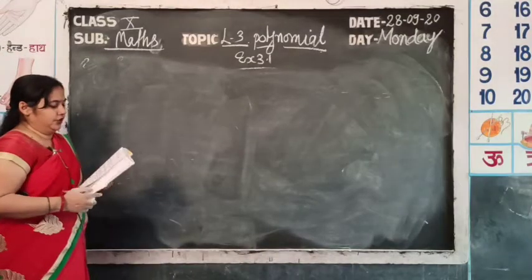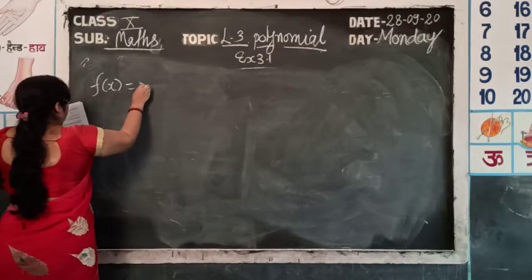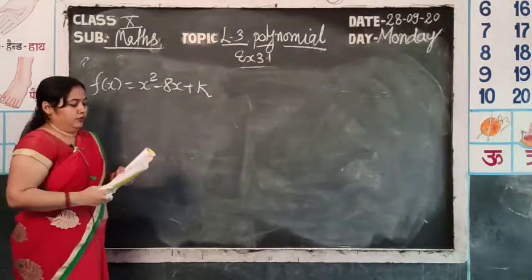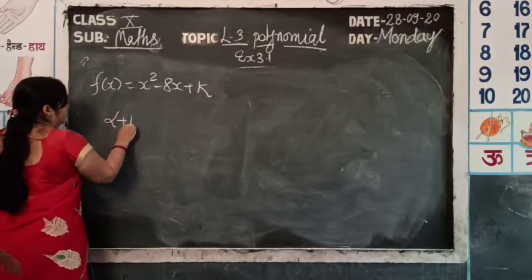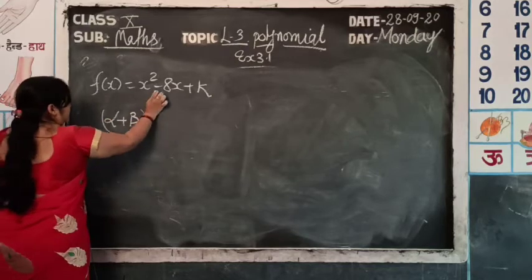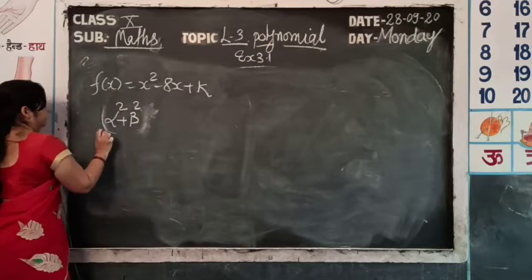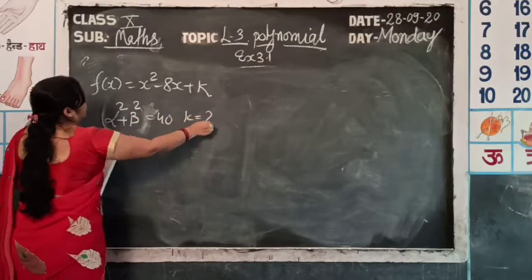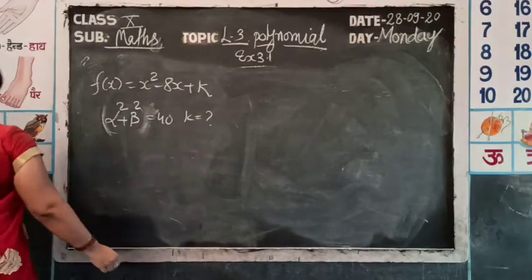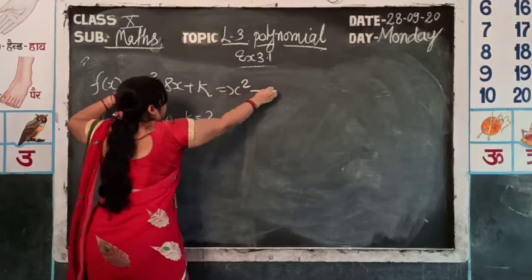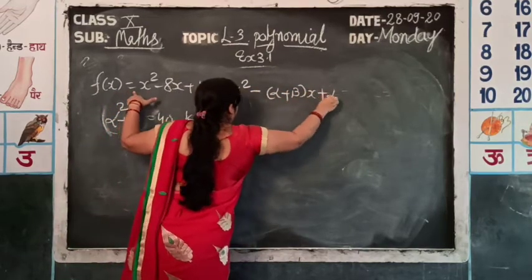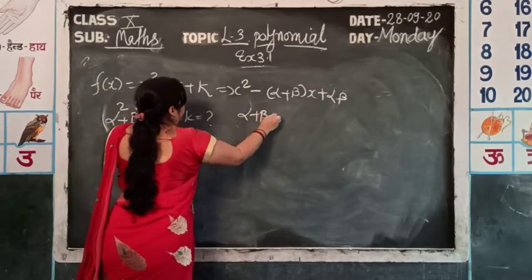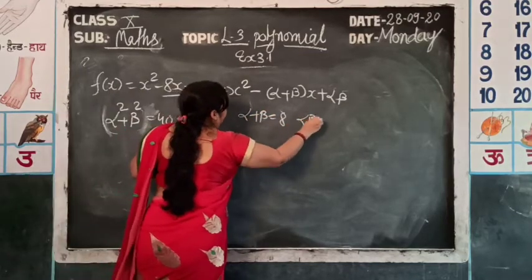Special problem: if the sum of squares of zeros of f(x) = x² - 8x + k is 40, find k. Compare x² - 8x + k with the standard formula x² - (alpha + beta)x + (alpha × beta). So alpha + beta = 8, and alpha × beta = k.